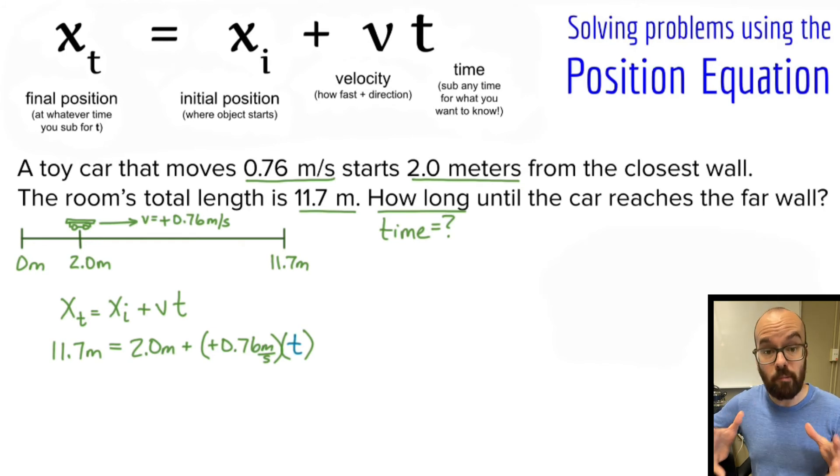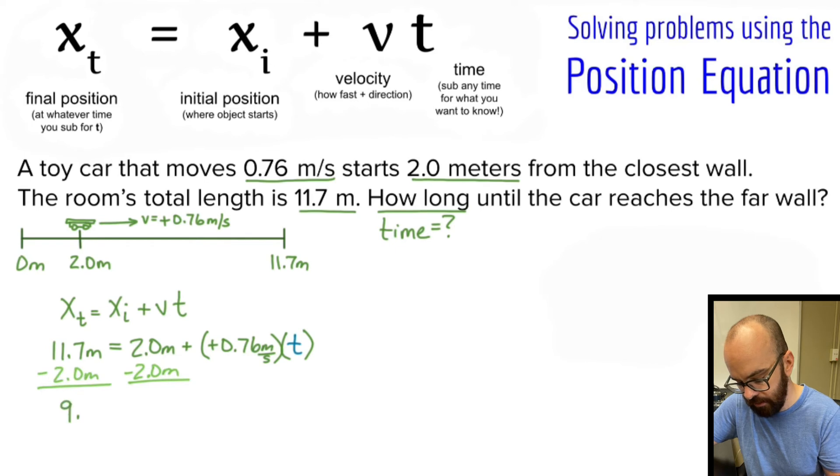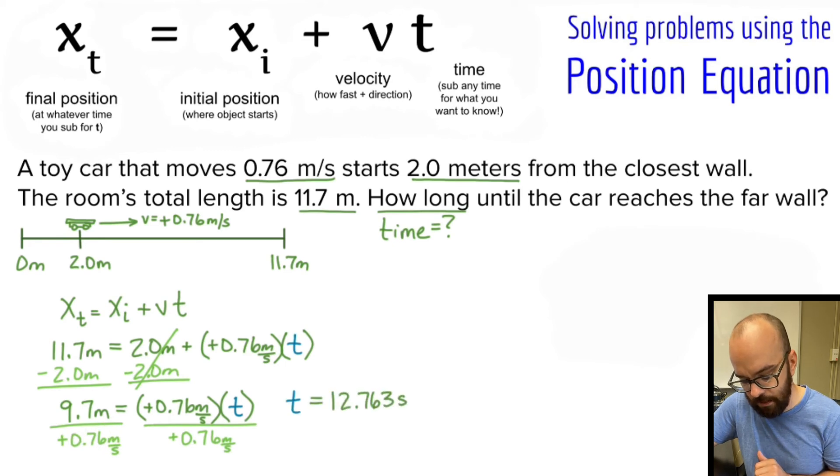In other problems we might know the time that it takes to get to some position and we're solving for position, or maybe we're solving for velocity. You have to read the context of the problem to know which variable you're solving for. Alright, let's do a little bit of algebra. I'm going to subtract 2 meters from both sides. I'm going to get 9.7 meters equals - 2 minus 2 is 0 - the rest of my problem there. Then I'm going to divide by that velocity of 0.76 meters per second. And then I'm going to get that the time is 12.763 seconds.